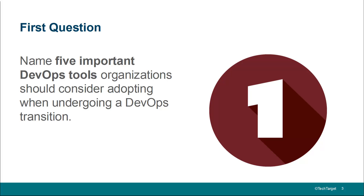There are more categories — I don't even talk about monitoring and stuff like that — but I think those are the big ones. For configuration management, I'd go with Chef or Ansible. For source code management, I'd go with Git — I'm a big Git fan. Continuous integration, I like Jenkins. Containerization, I like Docker. And for collaboration, I'm a big fan of Jira.